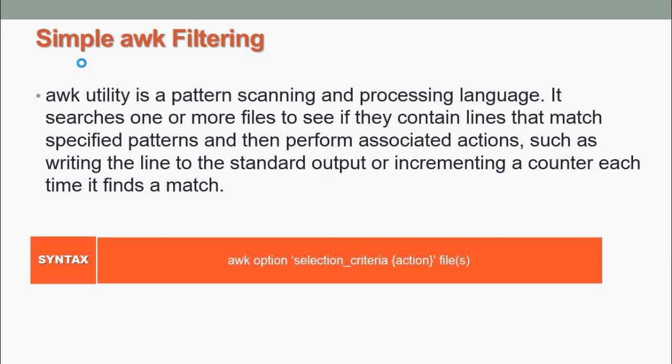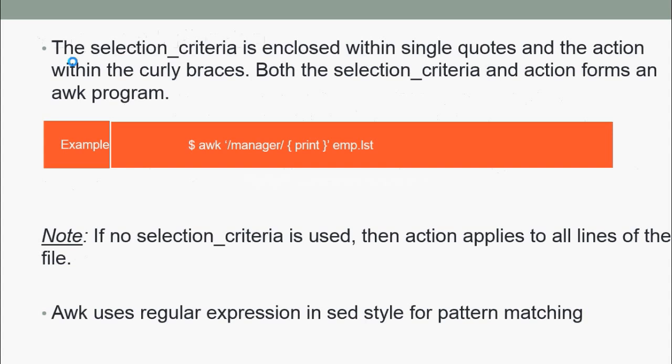The syntax is: awk option, selection_criteria, action, file. Selection criteria filters input and selects lines for the action component to act upon. The selection criteria is enclosed within single quotes and the action within curly braces. Both the selection criteria and action form an AWK program.